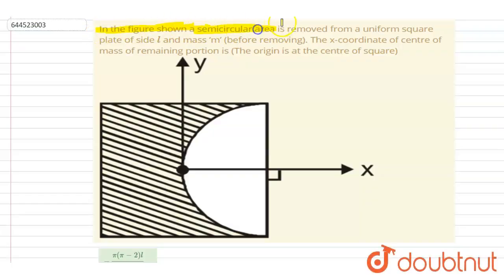Hello everyone. In the figure shown, a semicircular area is removed from a uniform square plate of side l and mass m. Before removing, the x-coordinate of the center of mass of the remaining portion will be what?